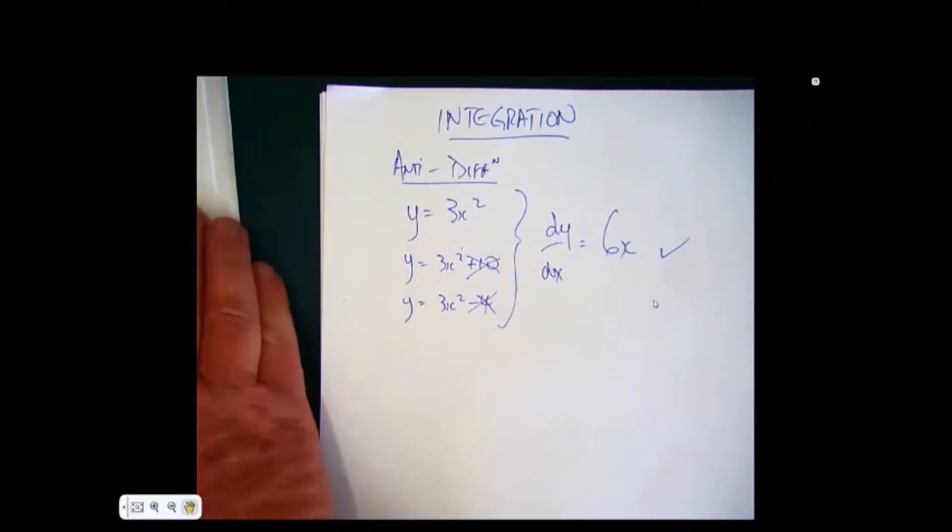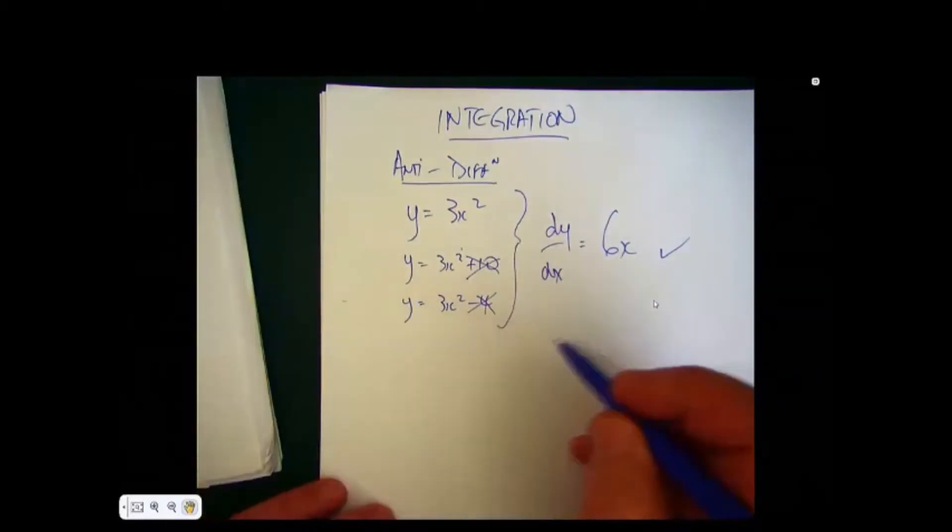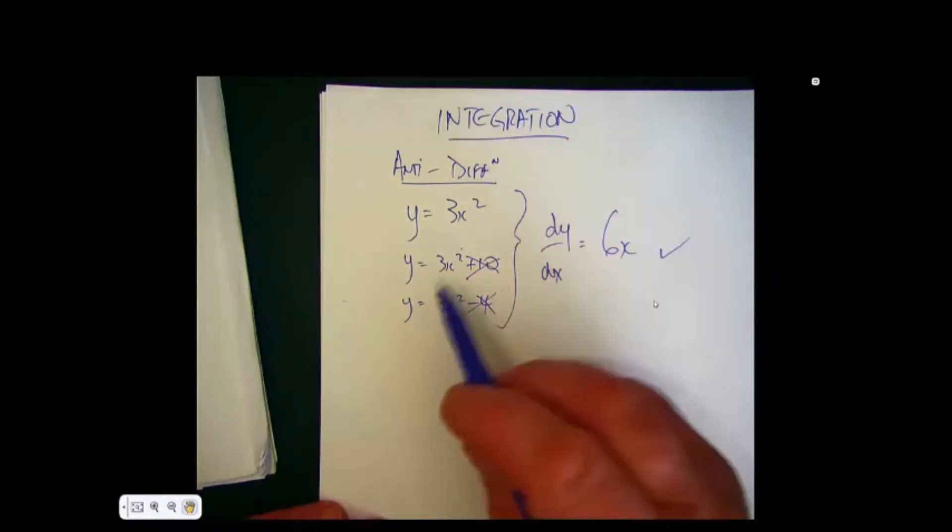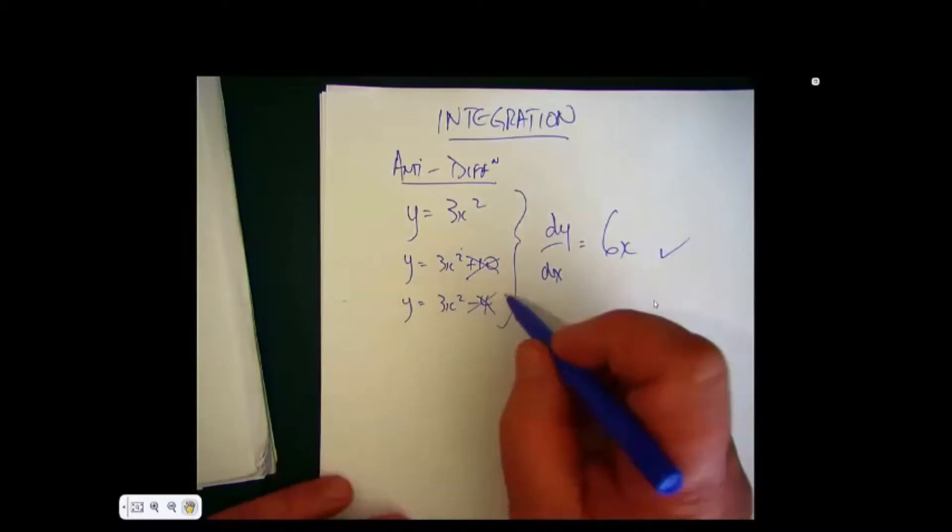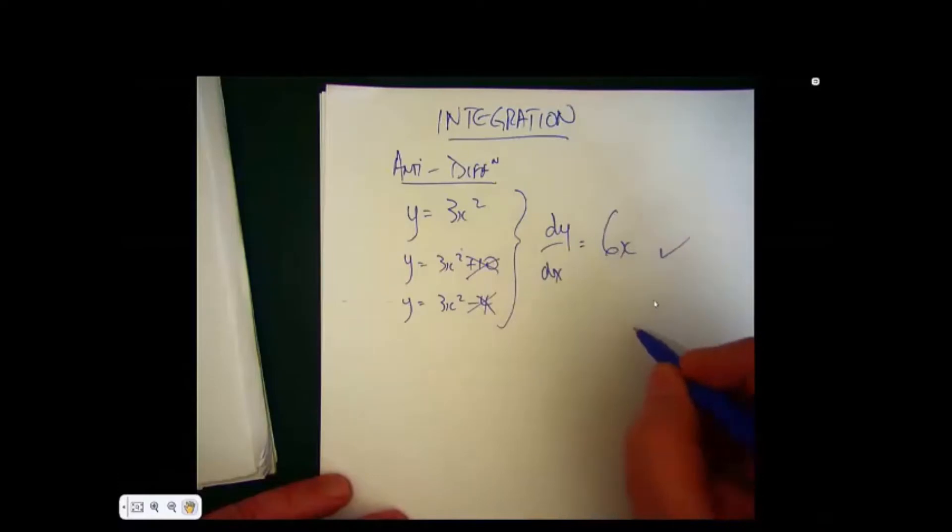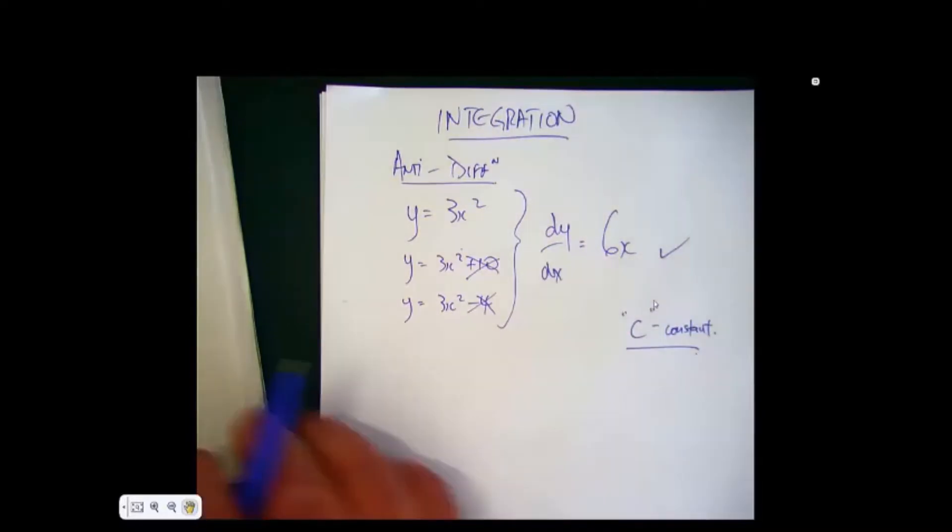So when we're going back, if we have 6x and you're asked to integrate this, then you have to try and get back to the original form. Now we don't know what the constants are, so we need the letter c, which stands for a constant, and this will be brought in in a few minutes.